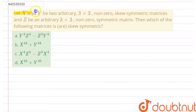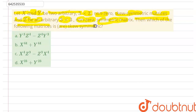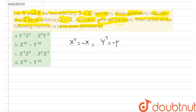In this question, we are given that let X and Y be two arbitrary 3×3 non-zero skew symmetric matrices, and Z be an arbitrary 3×3 non-zero symmetric matrix. Then which of the following matrices are skew symmetric? We are given that X and Y are skew symmetric matrices, so X transpose equals minus X and Y transpose equals minus Y. Also, Z is a symmetric matrix, so Z transpose equals Z. We need to check which among the options is a skew symmetric matrix.